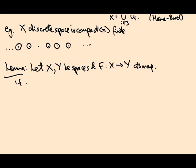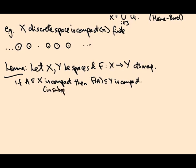If A is a subset of X which is compact in the subspace topology, then f(A) is also compact in the subspace topology. So this is in the subspace topology on A, and this is in the subspace topology on the image.